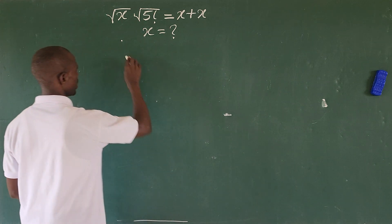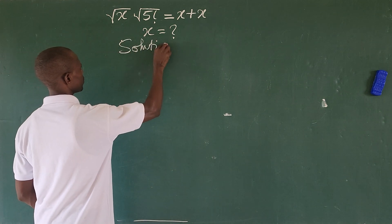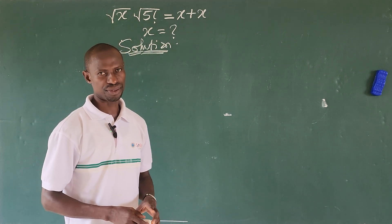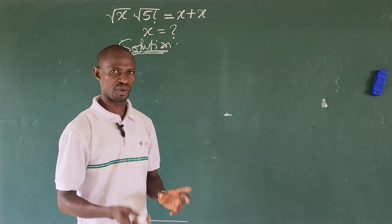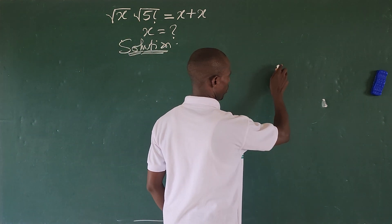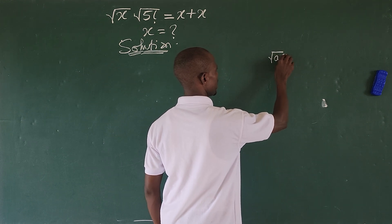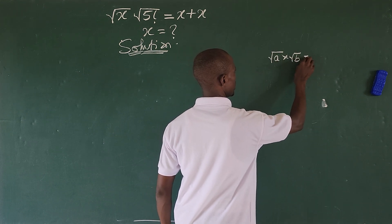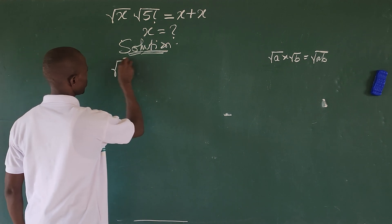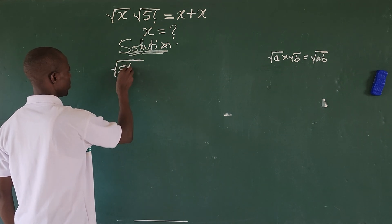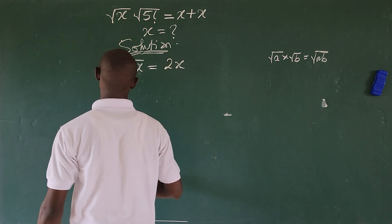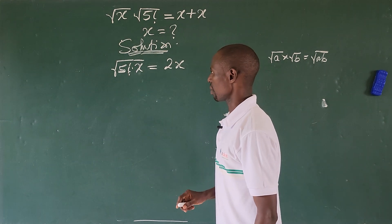So how do we solve for the value of x? Look at the right-hand side of the equation: x plus x sums to 2x. We can also rewrite the left-hand side. According to the law of surds, the square root of a times the square root of b equals the square root of a times b. So the left side becomes the square root of 5 factorial times x.